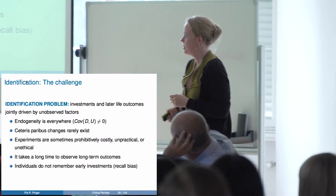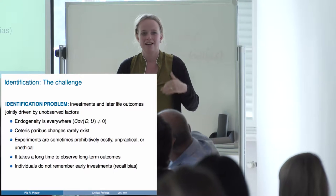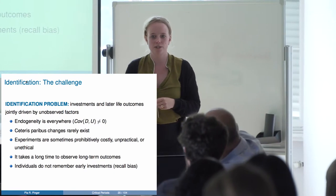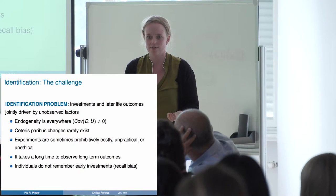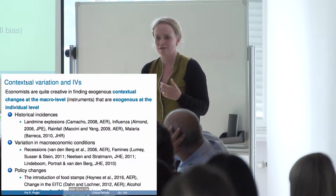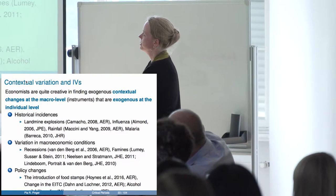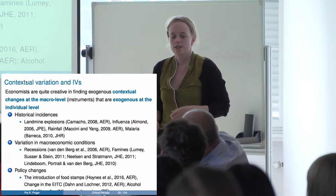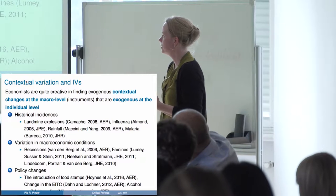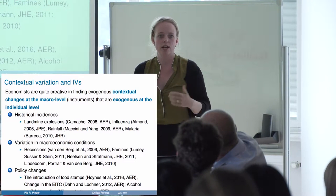Another strategy is to wait until people are adults and retrospectively ask them about the investments they received during childhood — but then the problem is they won't remember that very well, especially for investments before age four or five. People hardly remember anything before age four; they won't remember whether their parents treated them well or gave them adequate food. One strategy that people use is to exploit some kind of contextual variation — variation due to historical incidents, macroeconomic conditions, or policy changes — that exogenously provided variation to the environment in which the child grew up.